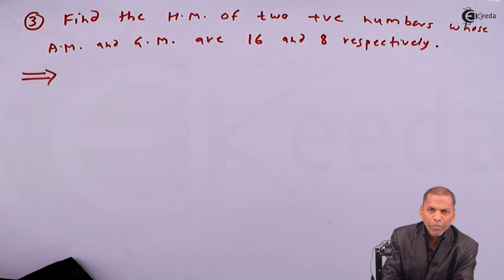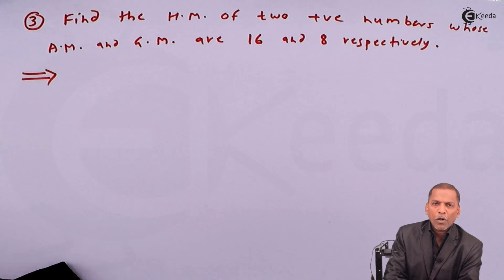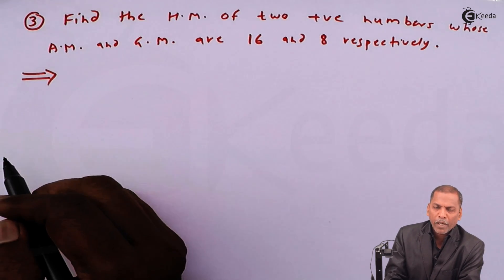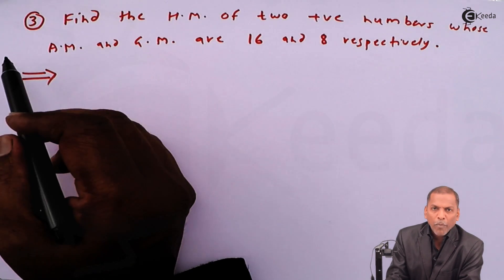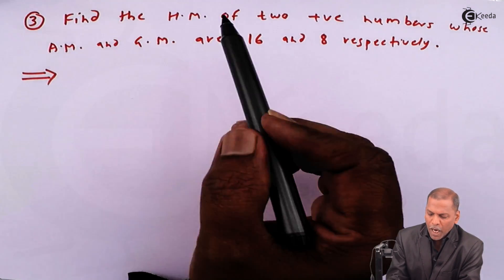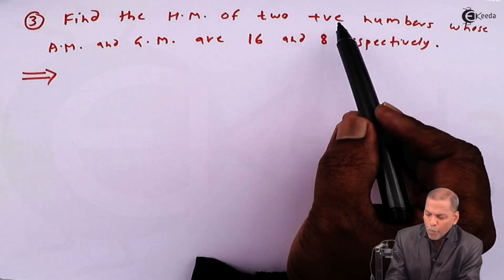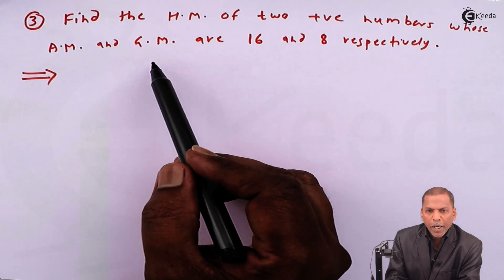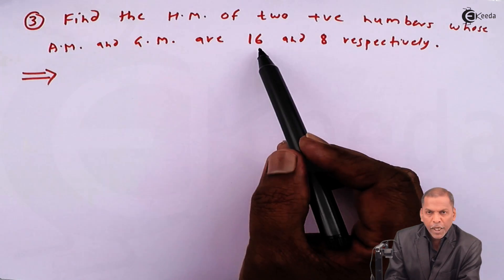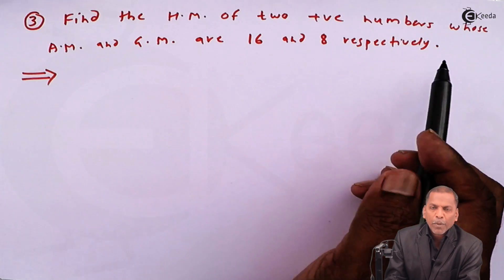Hello friends, now we see problem number three, which is based on arithmetic mean, harmonic mean, and geometric mean from the chapter Sequence and Series. The problem is: find the harmonic mean of two positive numbers whose arithmetic mean and geometric mean are 16 and 8 respectively.